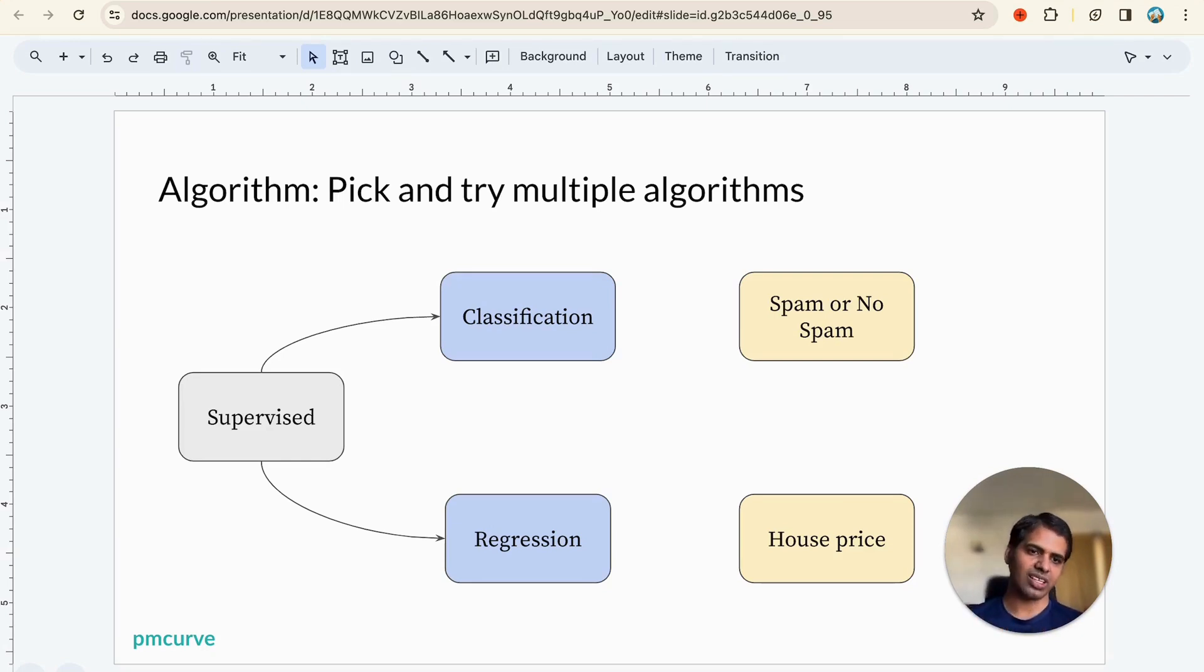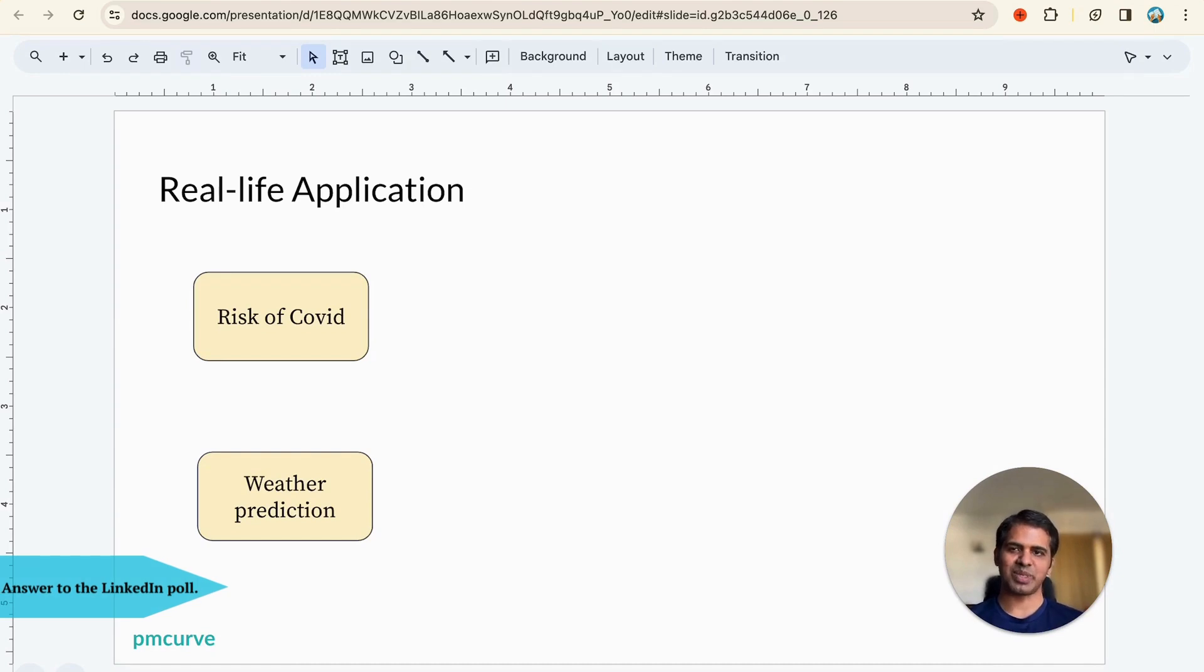You understand supervised as basically classification and regression. In both cases, we are giving historical data, data which is labeled. Let's take some real life applications because thinking about a problem and thinking about algorithms which can solve that problem is one of the primary duties of a product manager. Let's look at two cases: risk of COVID and weather prediction. Just take a moment and think whether you'll use classification or regression in each.